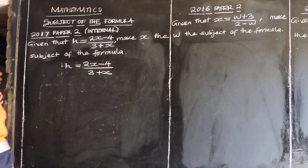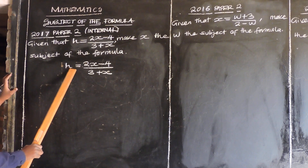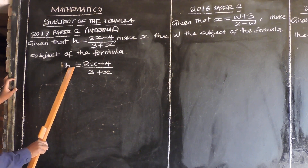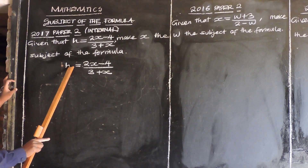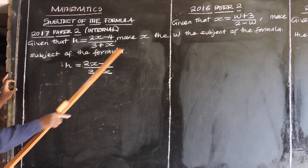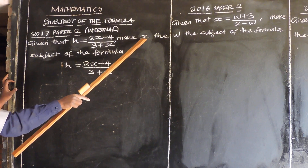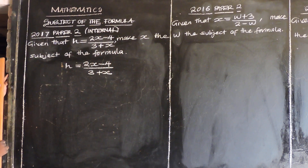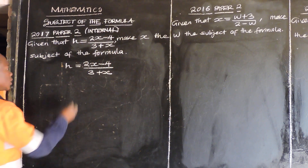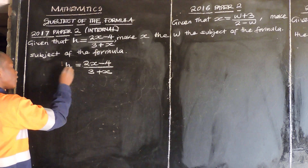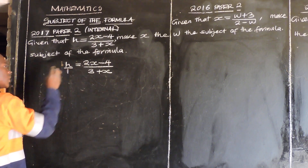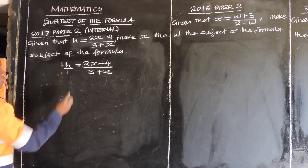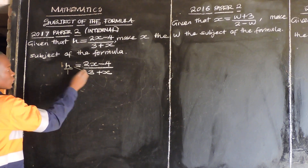So in our case, h is the subject of the formula. But one has to change the subject of the formula from h towards x — one has to make x the subject of the formula. So what you are going to do is divide by 1 as the first step. Then step number 2, you are going to cross multiply.